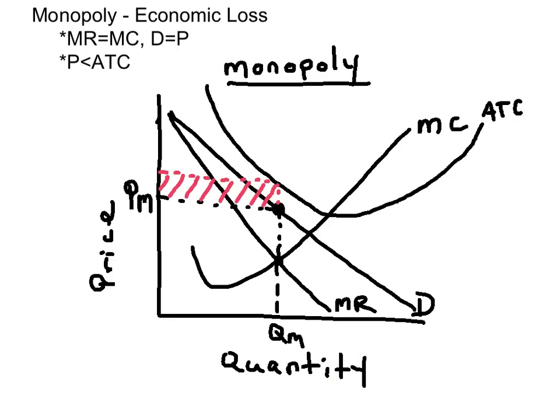You can easily shade in the area of total economic loss by starting with the price, moving up to the ATC, and carrying it over to the vertical axis.